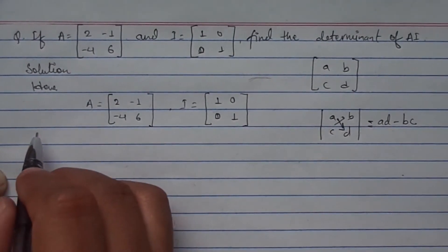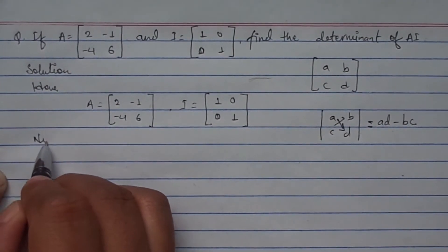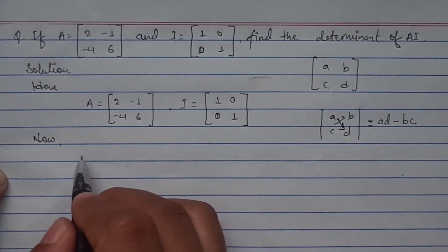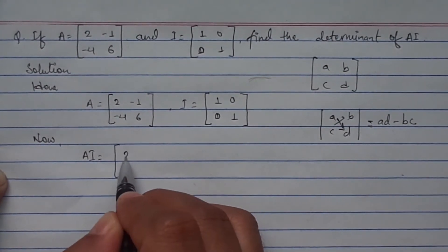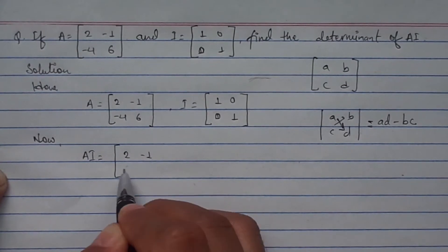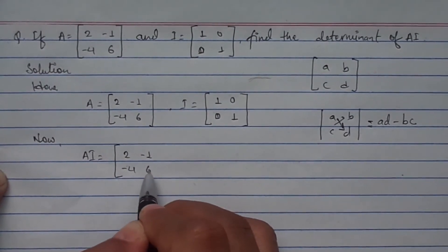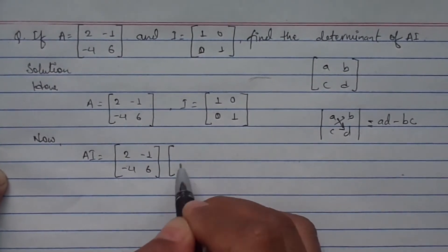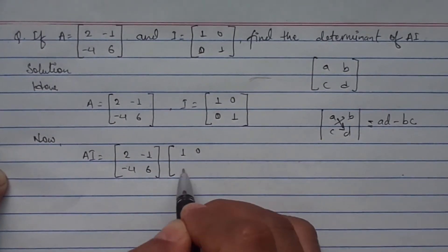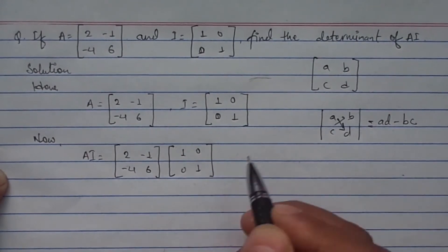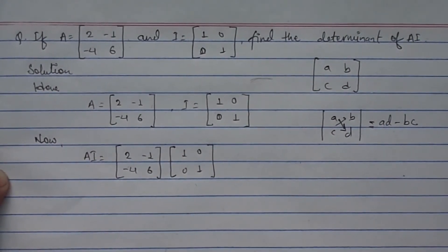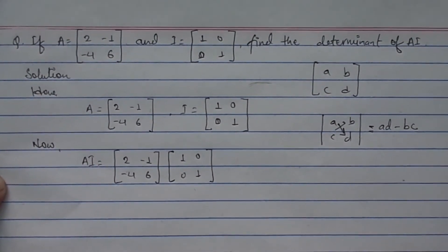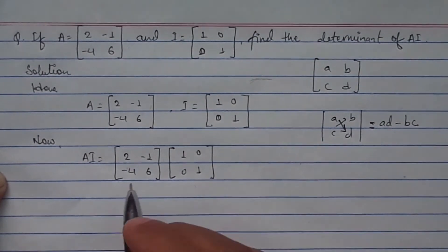Now we need to find the product of the matrices first. A equals [2, -1; -4, 6] and I equals [1, 0; 0, 1]. In a previous video you can find how to multiply two matrices.